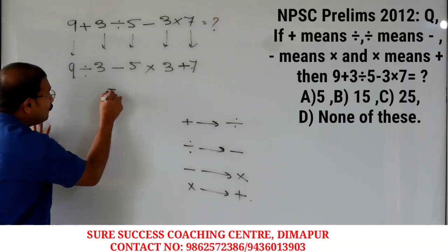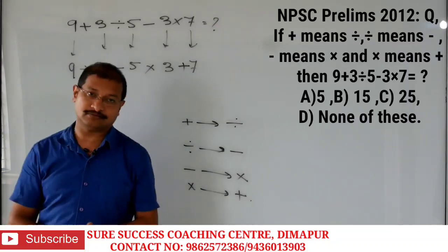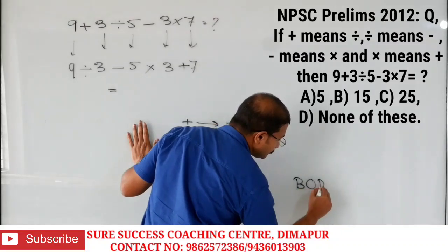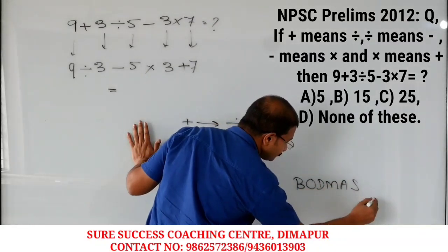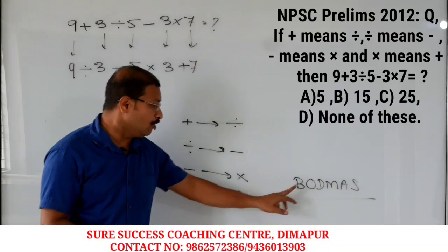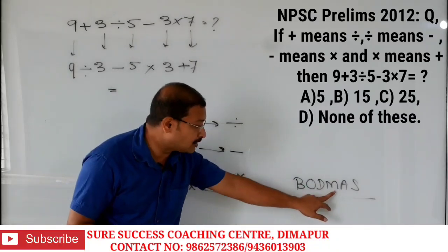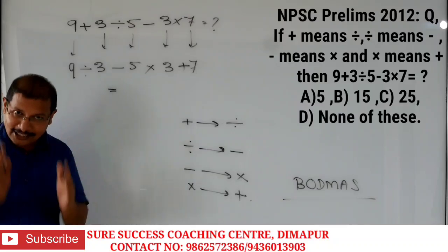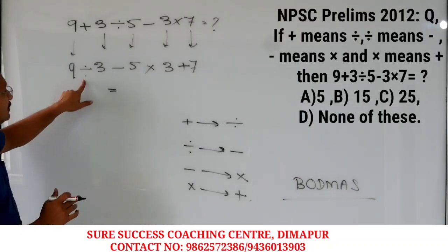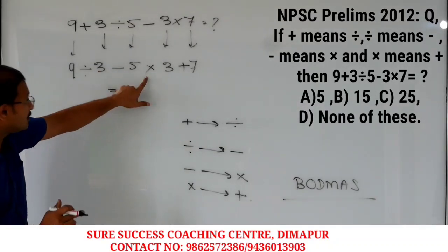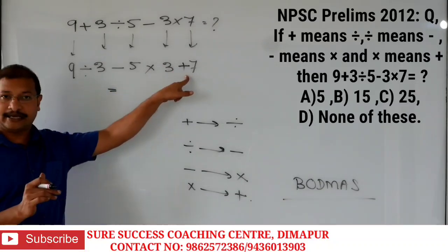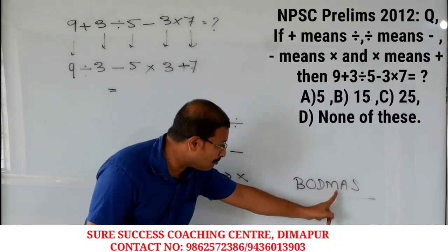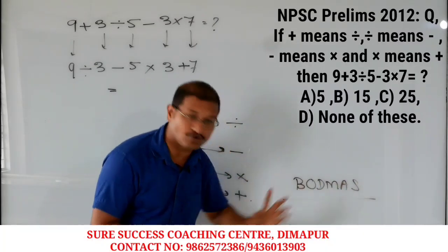Now we have to follow the BODMAS method — Bracket, Of, Division, Multiplication, Addition, Subtraction. In this question, division is there, subtraction is there, multiplication is there, addition is there. So what will you do first? Division, then multiplication, then addition, then subtraction.